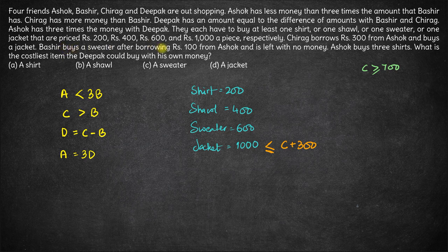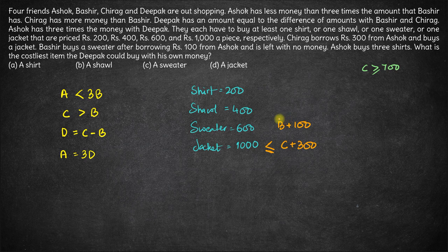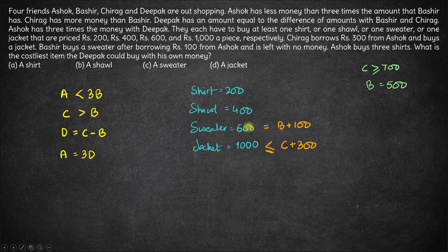Bashir buys a sweater after borrowing 100 from Ashok. If Bashir had B rupees initially and takes 100 from Ashok, he will have B plus 100 rupees, and he buys a sweater and is left with no money. So B plus 100 should be exactly equal to 600, which tells us that Bashir initially had exactly 500 rupees.